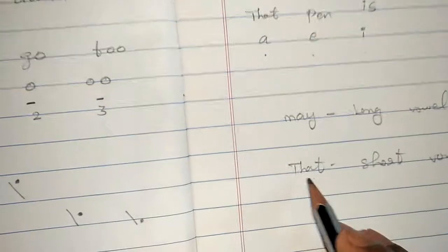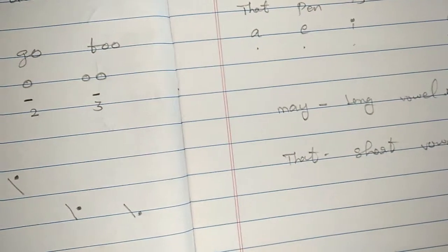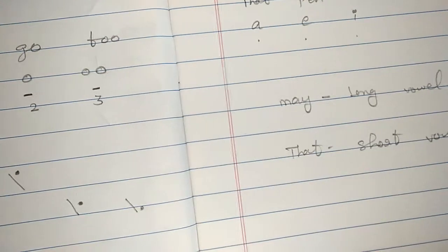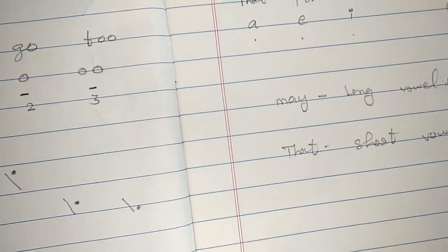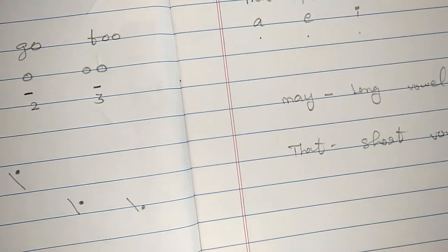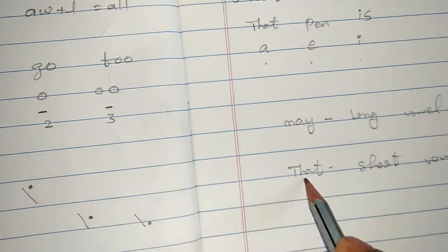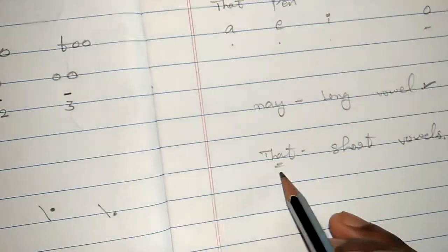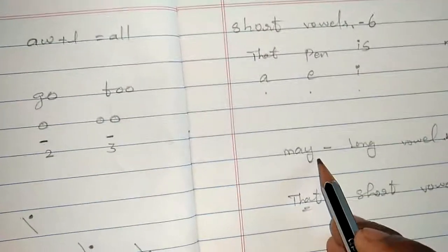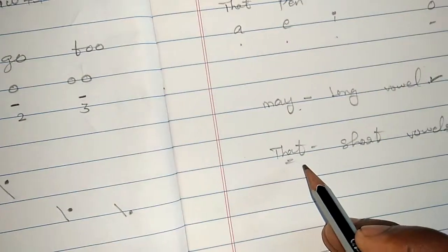Short vowel - the E sound is that. That E. That E. So short vowel is what you are. May has that thick mark, this one has that light mark.